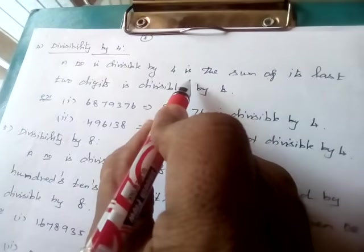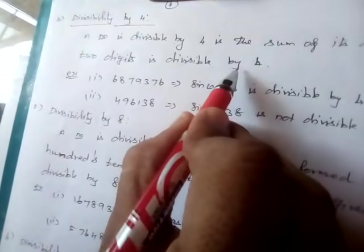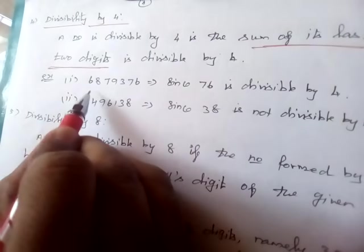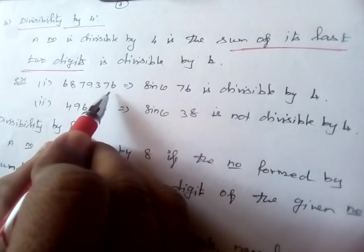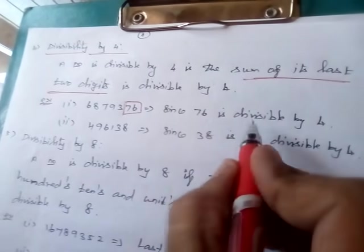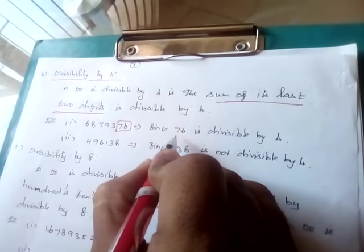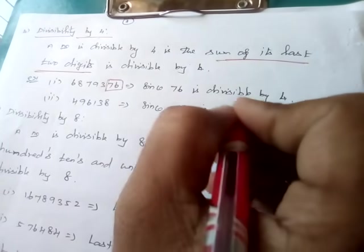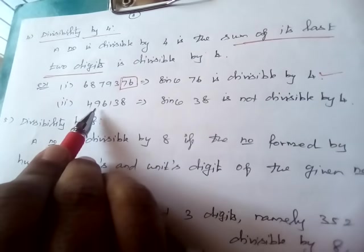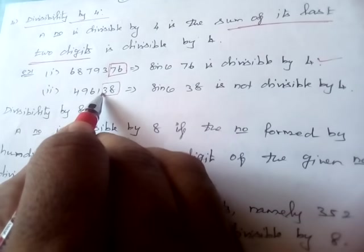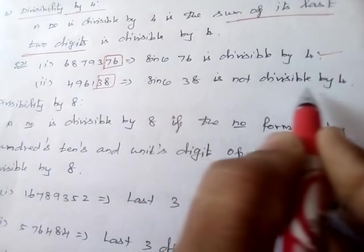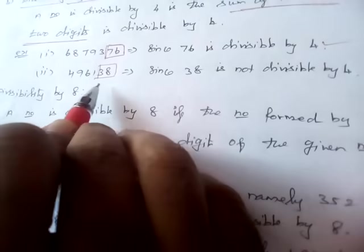Divisibility by 4: a number is divisible by 4 if the last 2 digits form a number divisible by 4. For example, 6879376 — the last 2 digits are 76, and 76 is divisible by 4, so the entire number is divisible by 4. For 496138, the last 2 digits are 38, and 38 is not divisible by 4, so the given number is not divisible by 4.